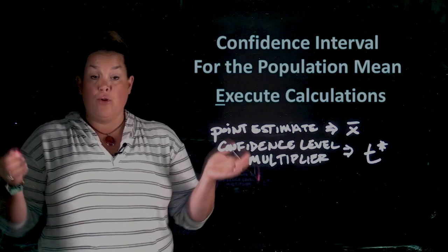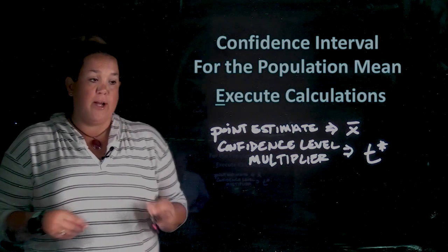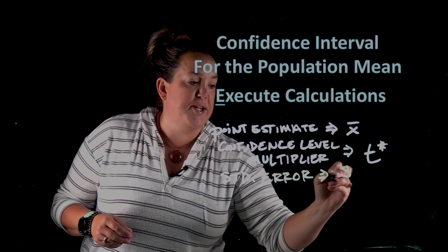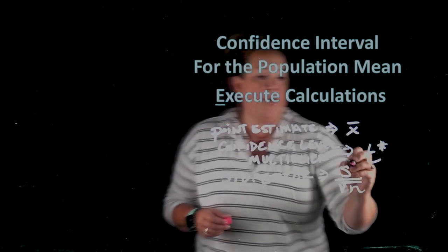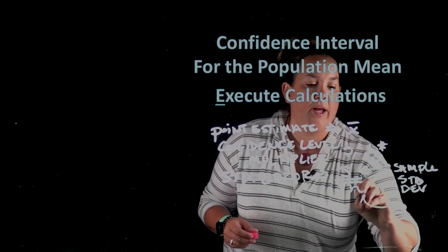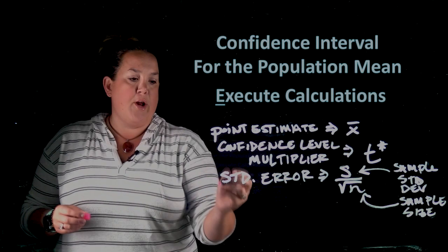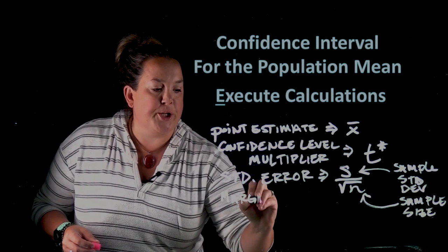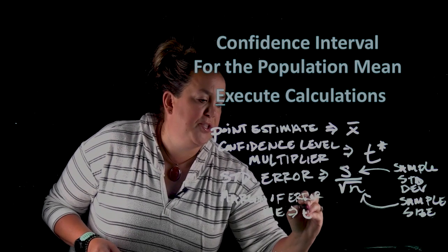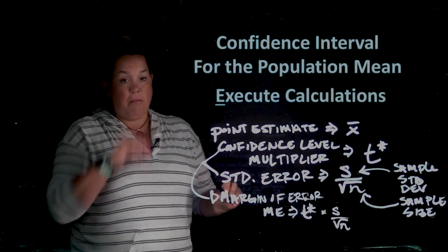If you don't know what the t-star multiplier is, you can look at the video on the t-star and the t-distribution. Then the next thing you'll need is something called standard error, and for these problems, standard error is s divided by the square root of n, where s is the sample standard deviation and n is the sample size. Once you create that quotient, you'll have calculated standard error. Then the next thing you'll need is margin of error, which is your t-star times your standard error.